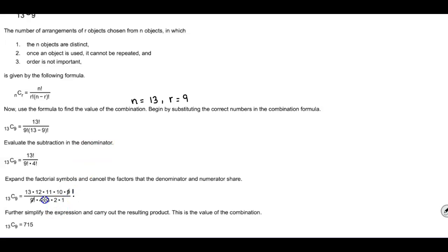So here we have 13 times 12 times 11 times 10 times 9 factorial divided by 9 factorial, and then we're going to expand the 4 factorial to be 4 times 3 times 2 times 1. So we can simplify the 9 factorials because that becomes 1.